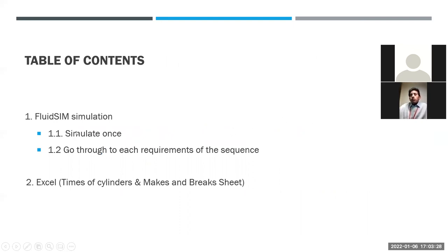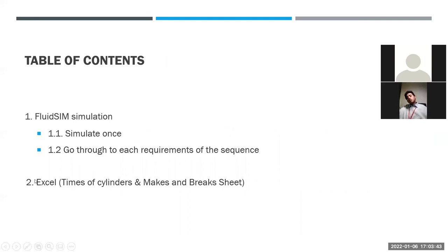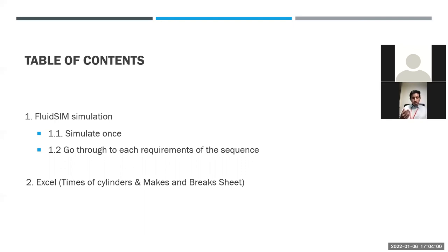I will show you the simulation first, then go through each requirement in the sequence one by one. After that, I'll explain the Excel spreadsheets — one for cylinder movement times, and the last one is the make-and-break sheet showing which row every relay, timer, or counter is used in for this circuit.